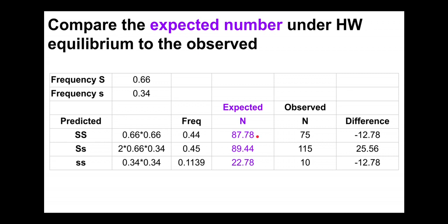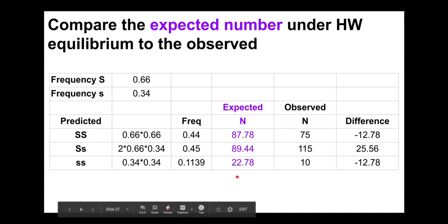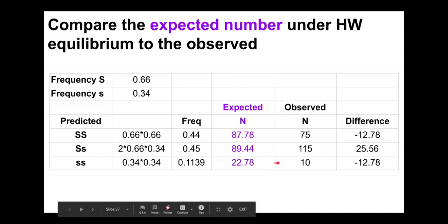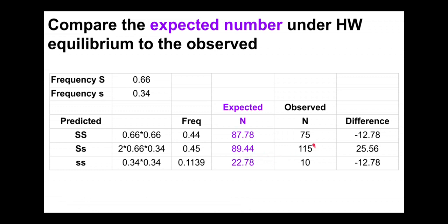We expected about 88 homozygous dominant (big S big S) individuals, but only observed 75 — a deficit of about 12. We predicted about 22 or 23 homozygous recessives, but only observed 10 — another deficit of about 12 or 13. Since we're deficient in homozygous dominants and homozygous recessives, we must have an excess of heterozygotes. We expected about 90 heterozygotes, but actually observed 115 — an excess of 25 or 26.